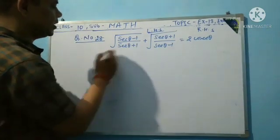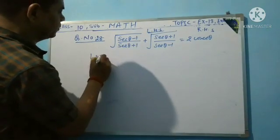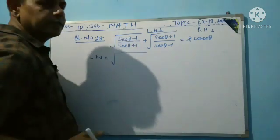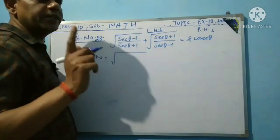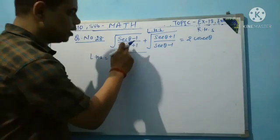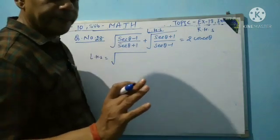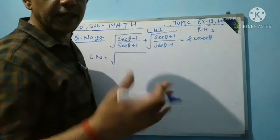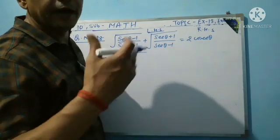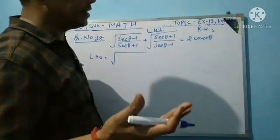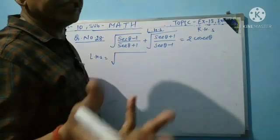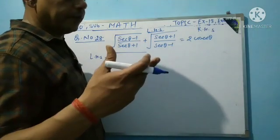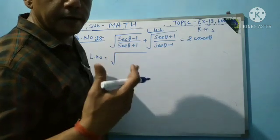So taken LHS equal to this. I always say to you that sec θ, cosec θ, tan θ — always change these into sin θ and cos θ, because it is easy to apply those formulas in our minds.